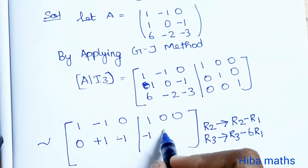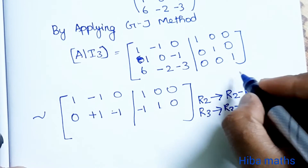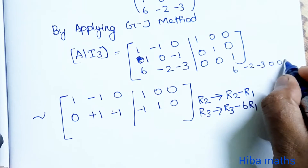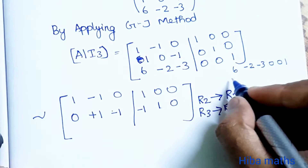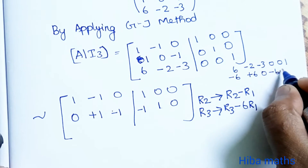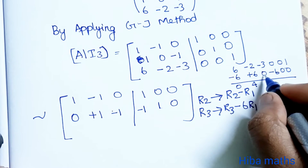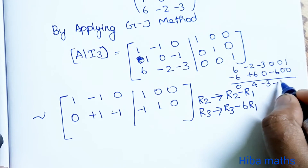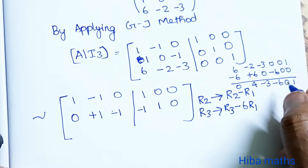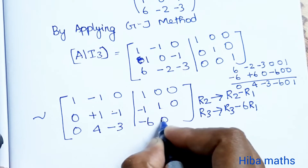The second column now has 0 in the first row, 1 in the second row. We need to eliminate the 4 in R3's second column. We apply R3 → R3 - 4×R2: [0-0, 4-4, -3-(-4) | -6-(-4), 0-4, 1-0] = [0, 0, 1 | -2, -4, 1].